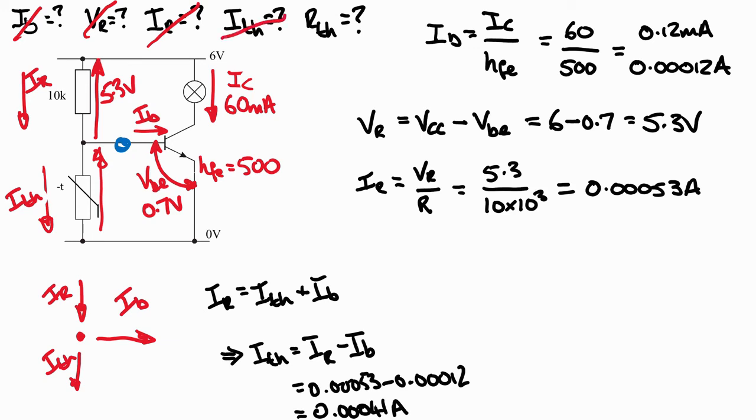And then finally to calculate the resistance of the thermistor, we just apply Ohm's law because we've got the current and we established earlier that the voltage across it is 0.7 volts. So the voltage of the thermistor divided by the current is 0.7 divided by 0.00041, which equals 1700 ohms to two significant figures.